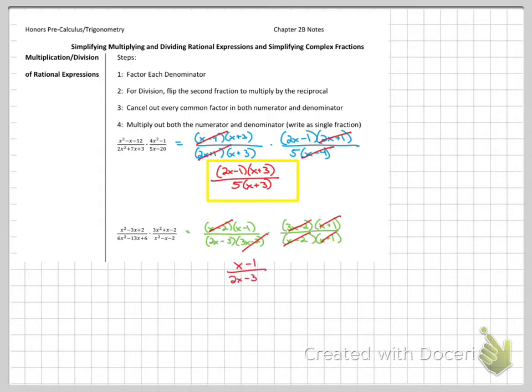And remember, the whole factor needs to match, so I don't want to see any of this. Oh, here's an x and here's an x. That's not how it works. The whole factor needs to match. Since those don't, those together as a fraction are my solution. Let's see what's next.